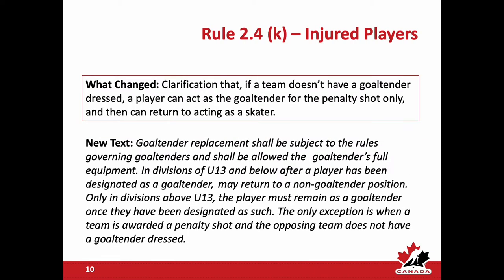Rule 2.4K — injured players: this applies to situations where a team lacks a dressed goaltender but meets the minimum of six skaters. If during such a game a team is awarded a penalty shot, a positional player can tend goal during that penalty shot and then return to their position as a skater.